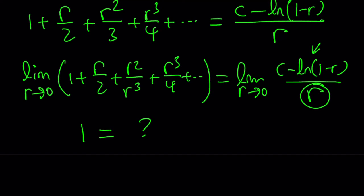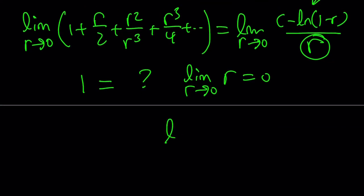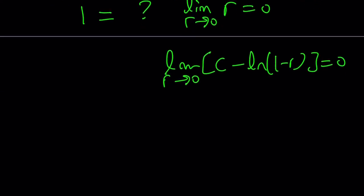Now, L'Hôpital's rule, whatever, indeterminate form, whatever you're going to call that. But here's what we need. Since limit as r approaches 0 of r is 0, we must have limit as r approaches 0 of c minus ln 1 minus r to approach 0. But how is that possible? If r approaches 0, this is going to approach 0. This is going to approach ln 1, which is 0. And this is going to approach c.